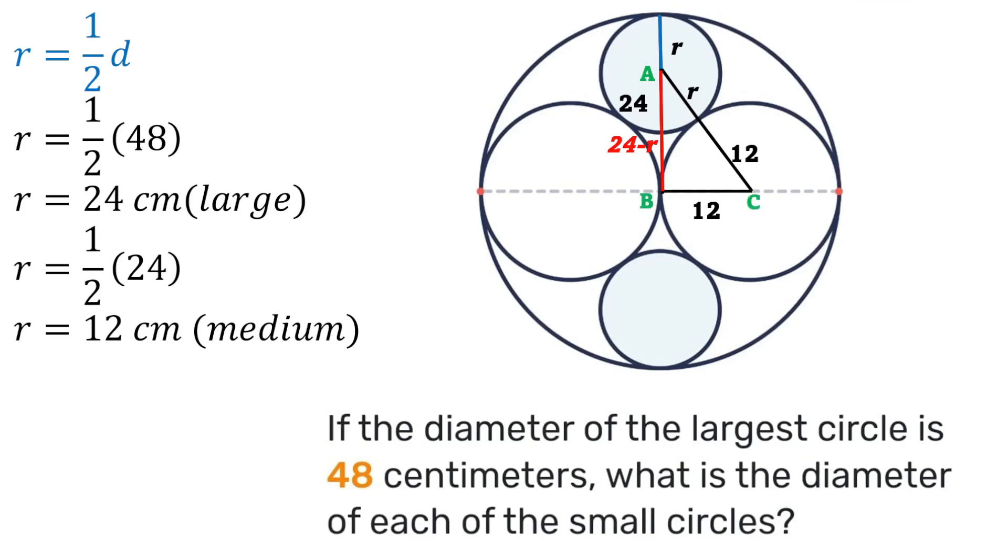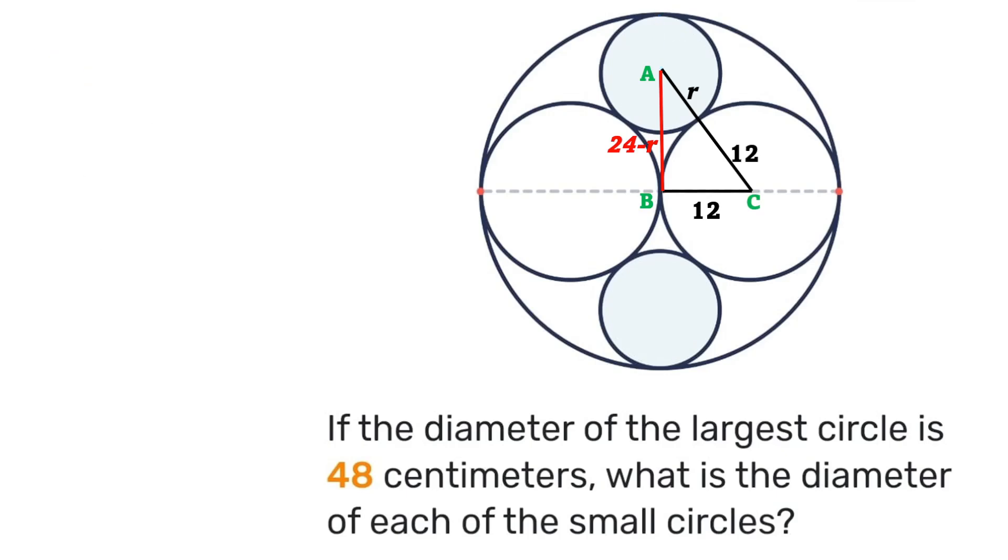We can apply Pythagorean theorem where we'll have that the square of AB plus the square of BC is equal to the square of AC. Substituting our values we'll have the square of 12 plus the square of 24 minus r is equal to the square of 12 plus r. Expanding and simplifying we'll have 144 plus 576 minus 48r plus r squared is equal to 144 plus 24r plus r squared.